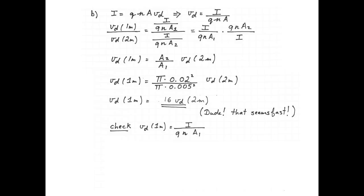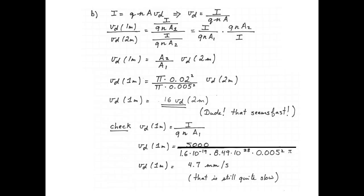The drift velocity of the electrons in the one meter segment of wire is given by current divided by charge multiplied by number of charge carriers per unit of volume and divided by area, which is 5,000 / (1.6 × 10^-19 × 8.49 × 10^28 × 0.005^2 × π), and that is 4.7 millimeters per second, which is still quite slow and quite reasonable for the drift velocity of electrons, which we know to be in the millimeter per second range.